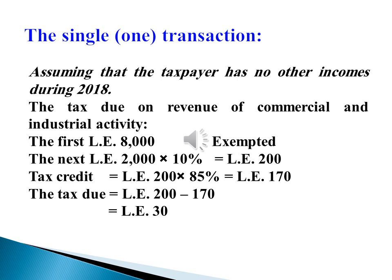Assuming that the taxpayer has no other income during 2018, the tax due on revenue of commercial and industrial activity can be calculated as follows: The first bracket of 8,000 Egyptian pounds is exempt. The next bracket, the remainder of 2,000 Egyptian pounds, is subject to 10 percent, equaling 200 Egyptian pounds. The tax credit equals 200; 85 percent amounts to 170. Then the tax due equals 200 minus 170, netting 30 Egyptian pounds.